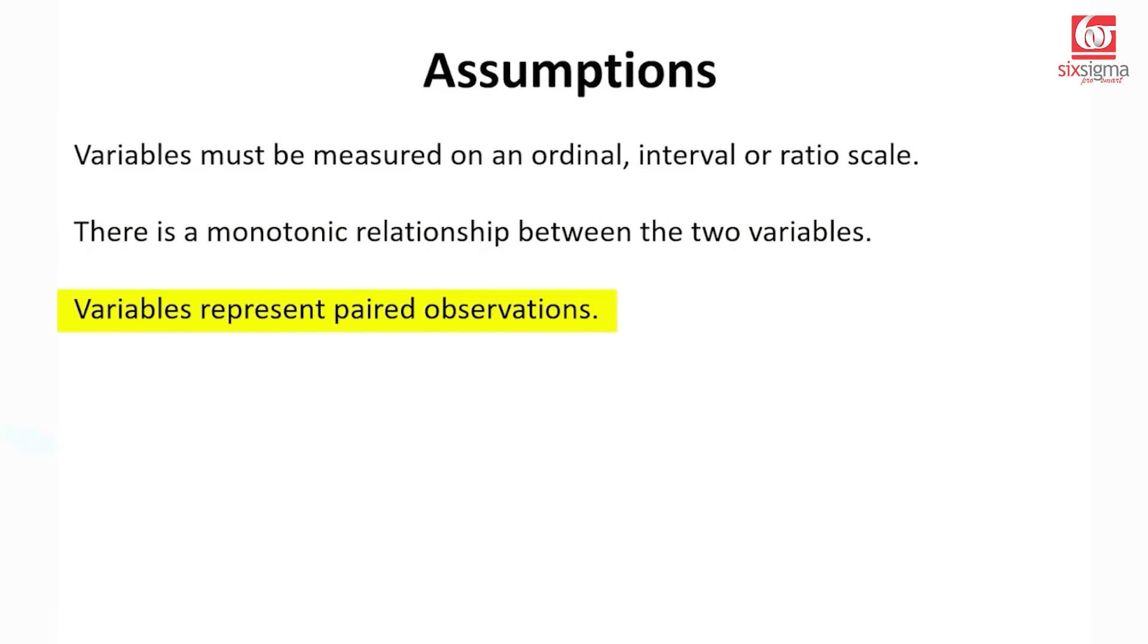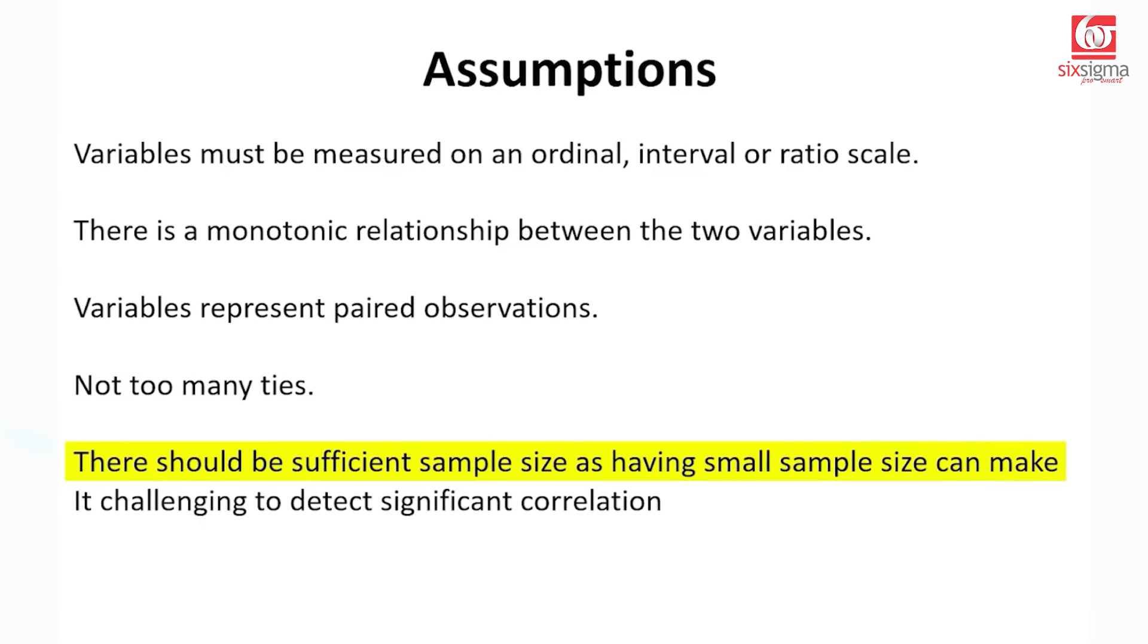Variables should be paired. Correlation is a concept of paired variables. So you can't have just one variable x and no y correspondingly or vice versa. You have to have both the variables paired. We do not want too many ties in our data. If we have some ties, then we may want to resolve them by assigning an average rank. And last assumption is pretty much the common assumption for all types of correlations. We should have sufficient data. There should be sufficient sample size as having small sample size can make it challenging to detect significant correlation.